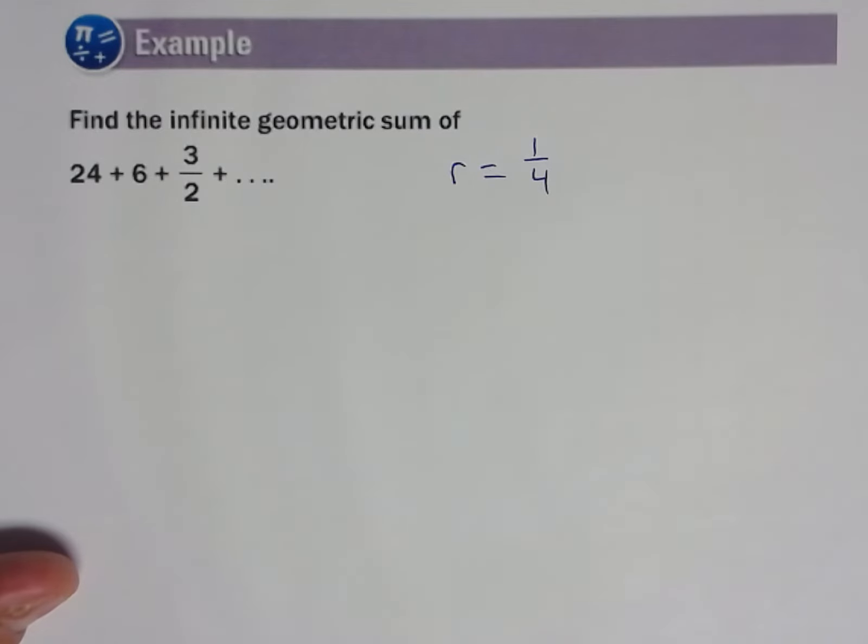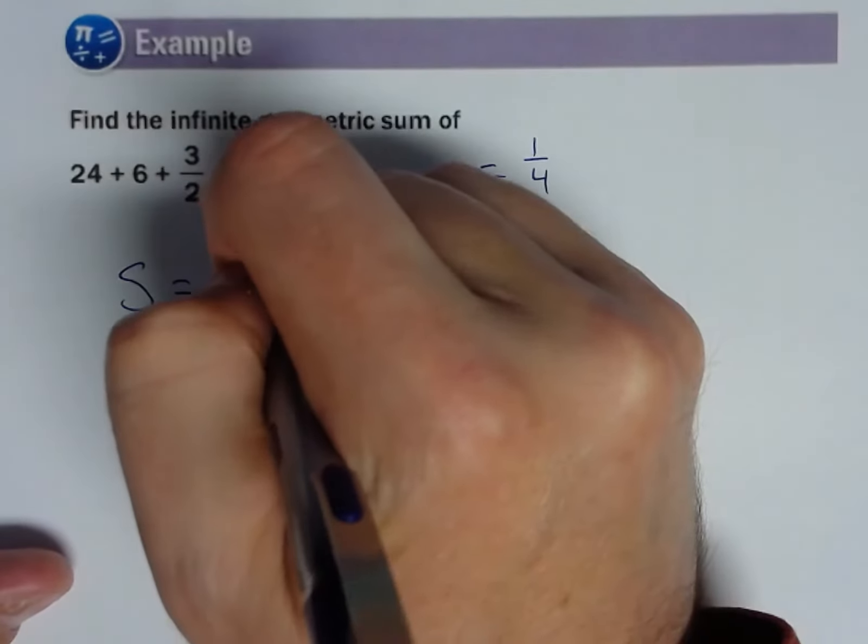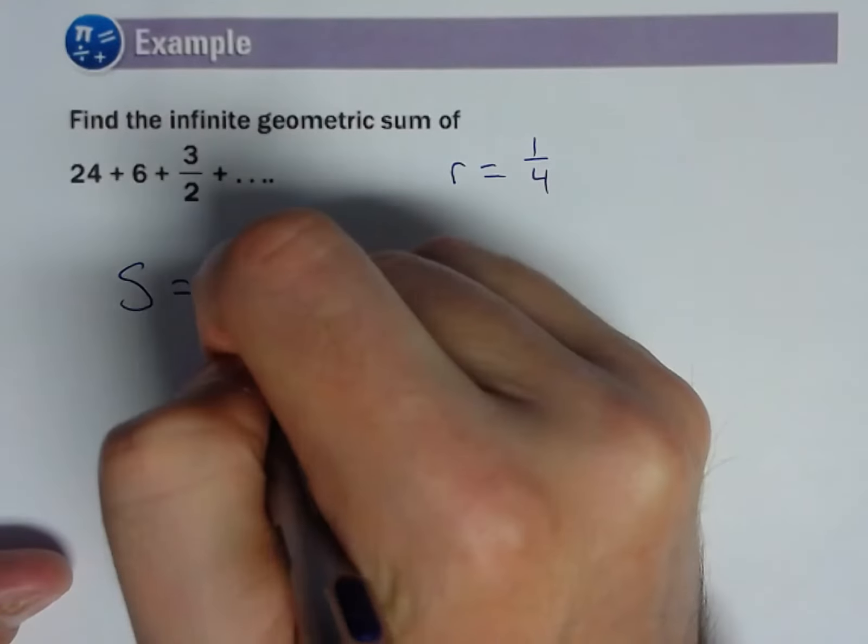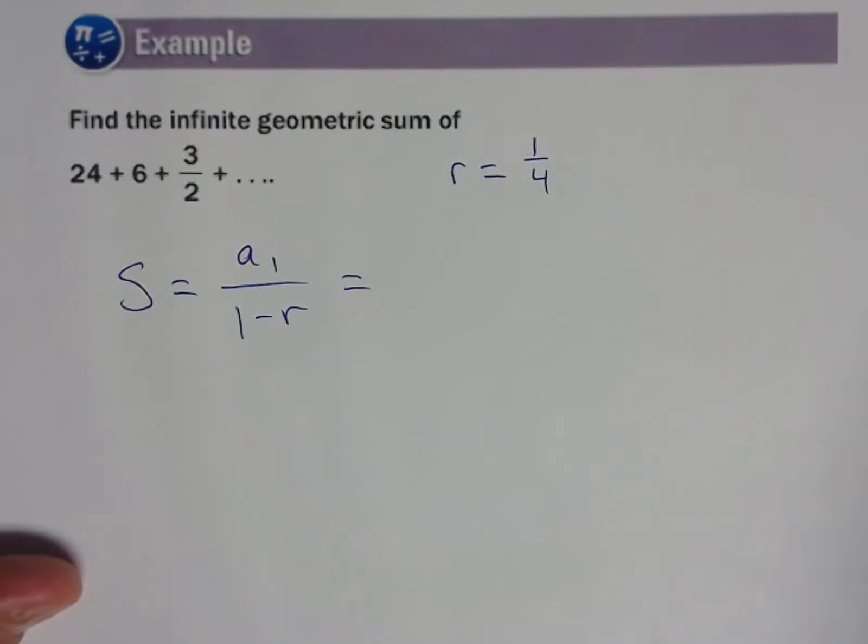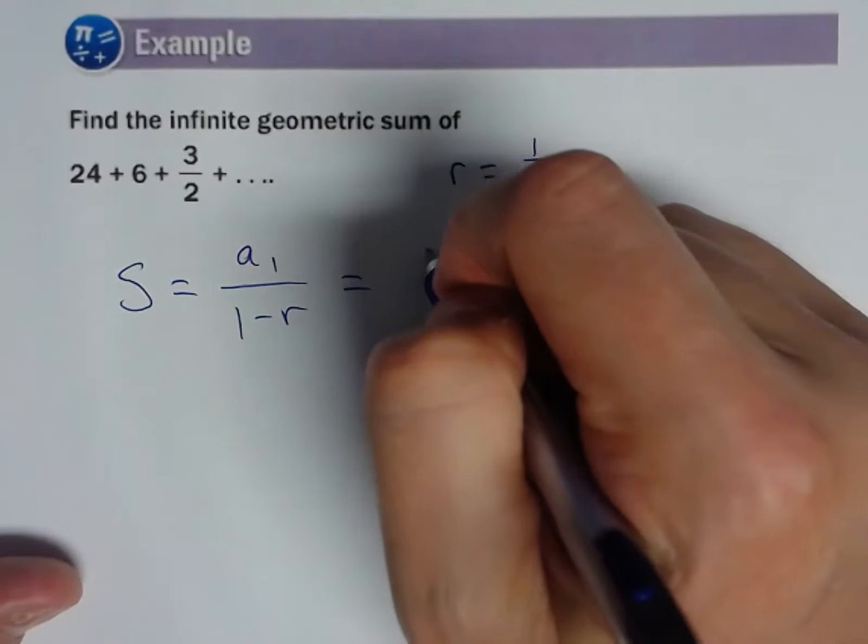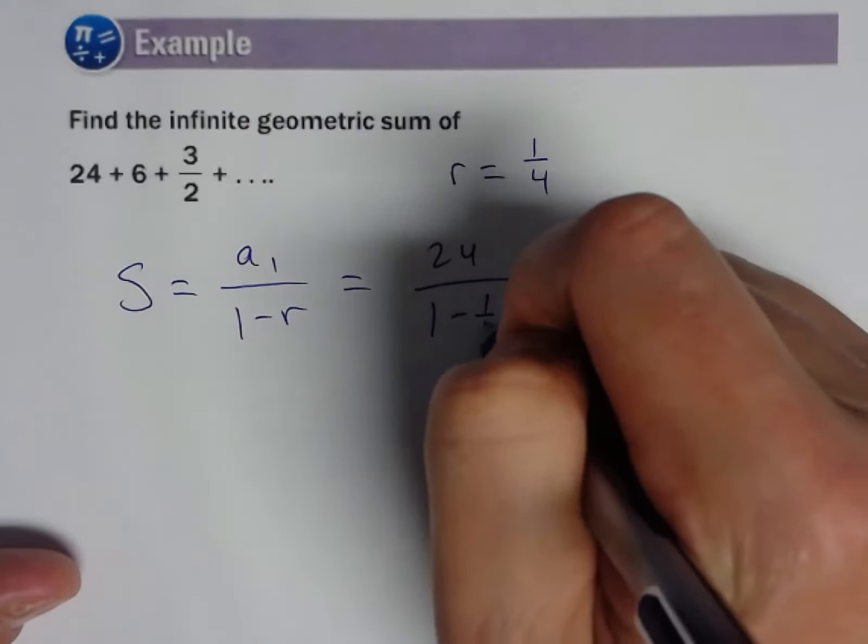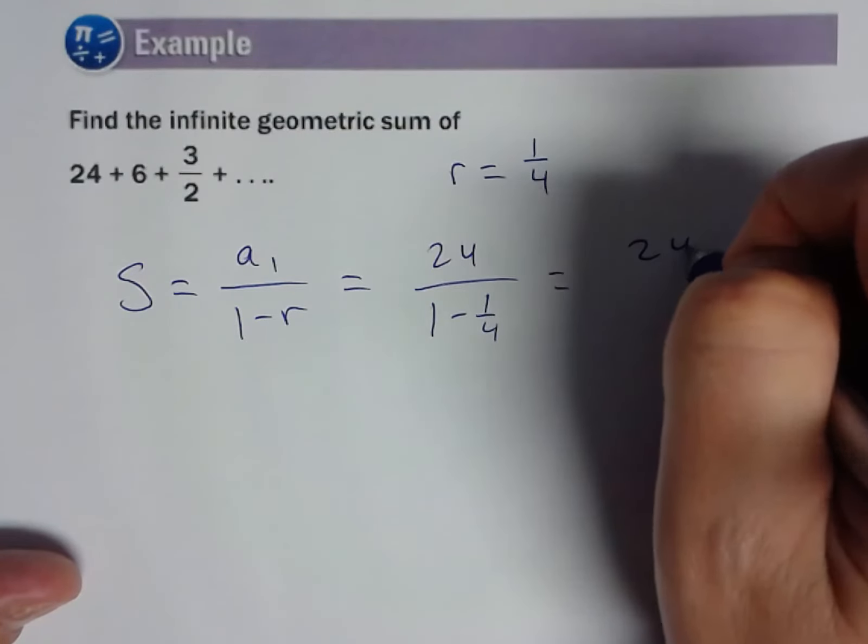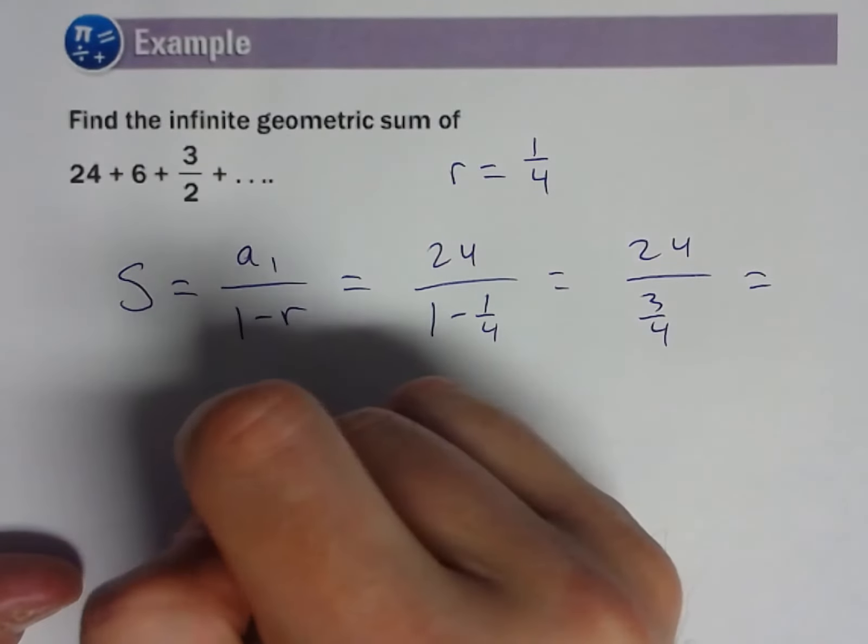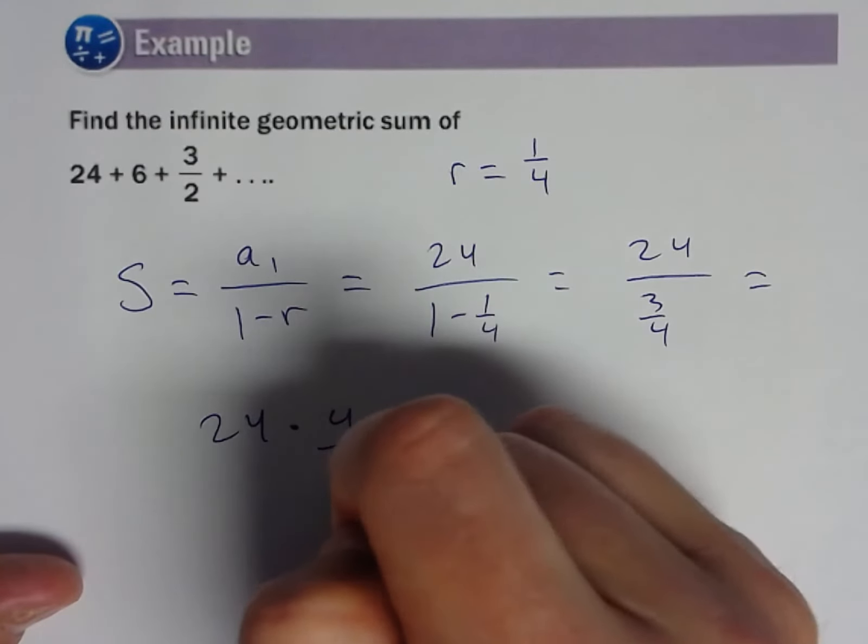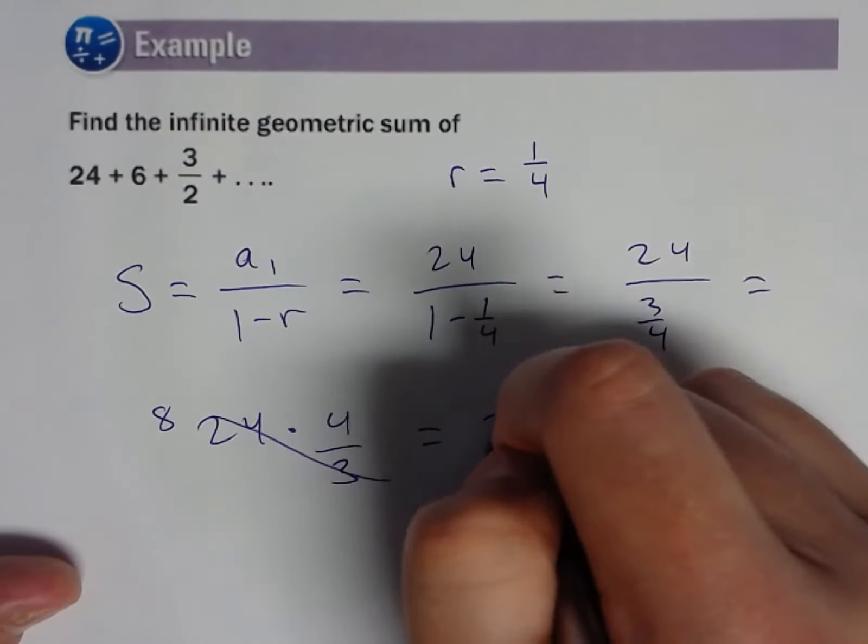What's our relationship? S equals the first term over 1 minus R. Pretty slick little relationship, pretty easy to use. So first term is 24, 1 minus R is 1 minus 1/4, so 24 over 3/4, which is the same as 24 times 4 over 3, and that would be 8 times 4.